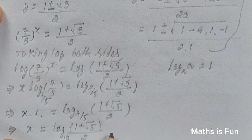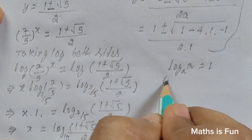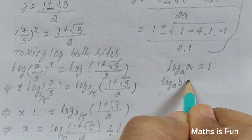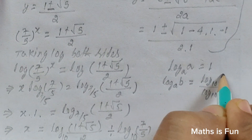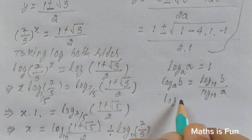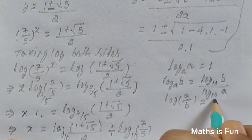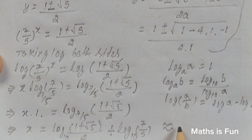We can convert this to base 10 using the change of base formula: x equals log base 10 of 1 plus root 5 over 2, divided by log base 10 of 7 over 5. Using the property that log a over b equals log a minus log b, this becomes log of 1 plus root 5 minus log 2, divided by log 7 minus log 5. Evaluating numerically, the value of x is approximately equal to 1.43.